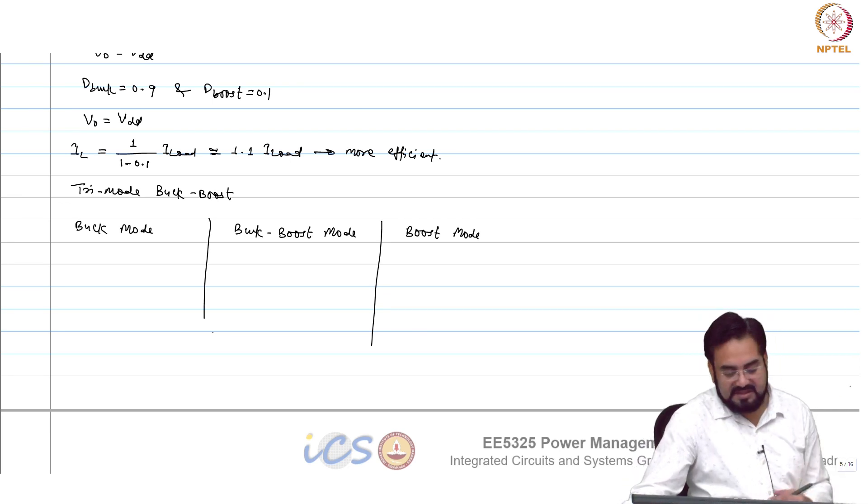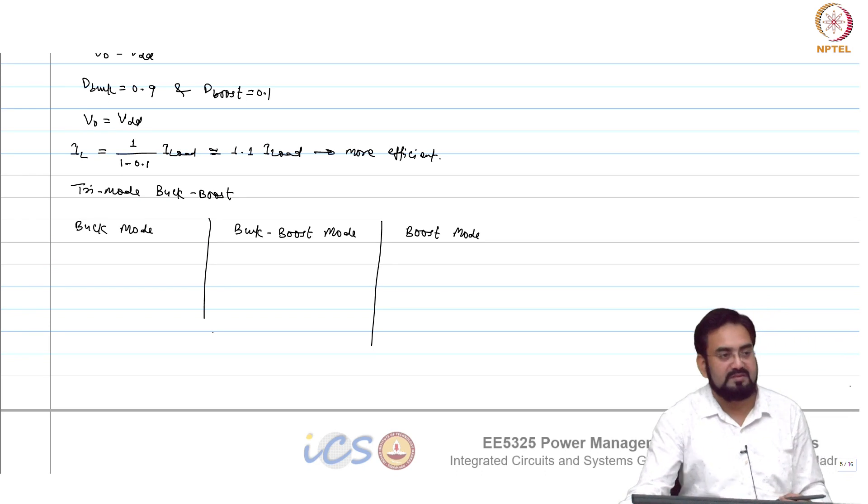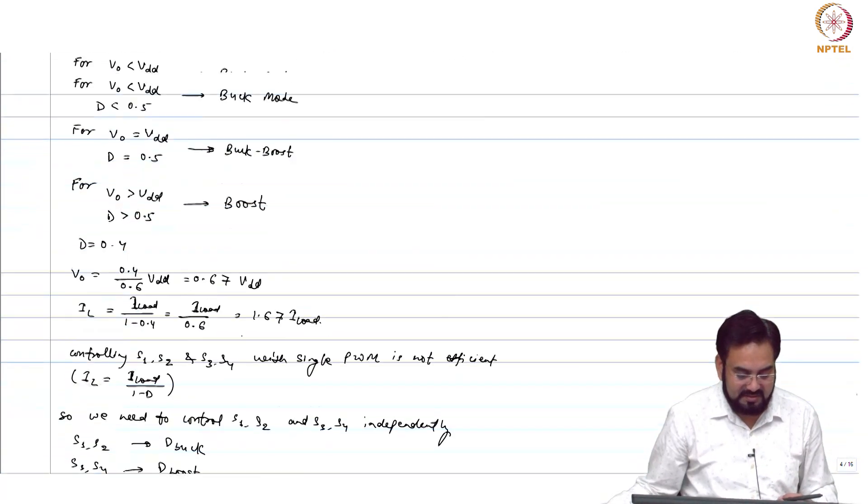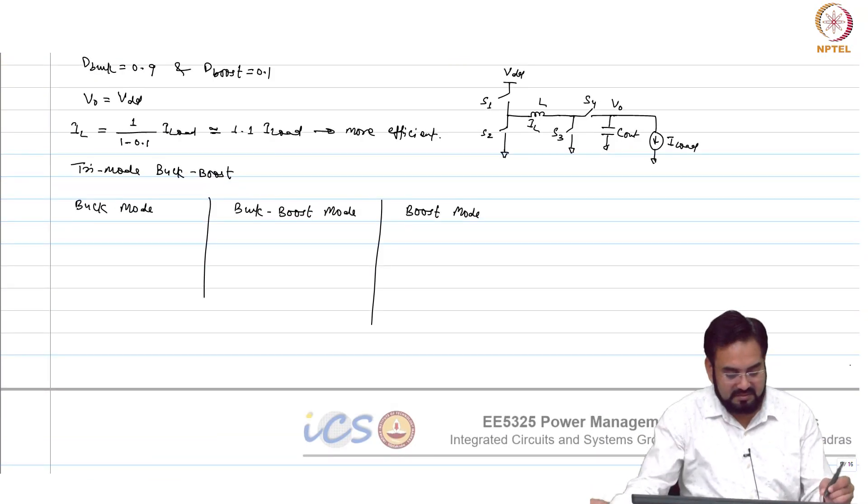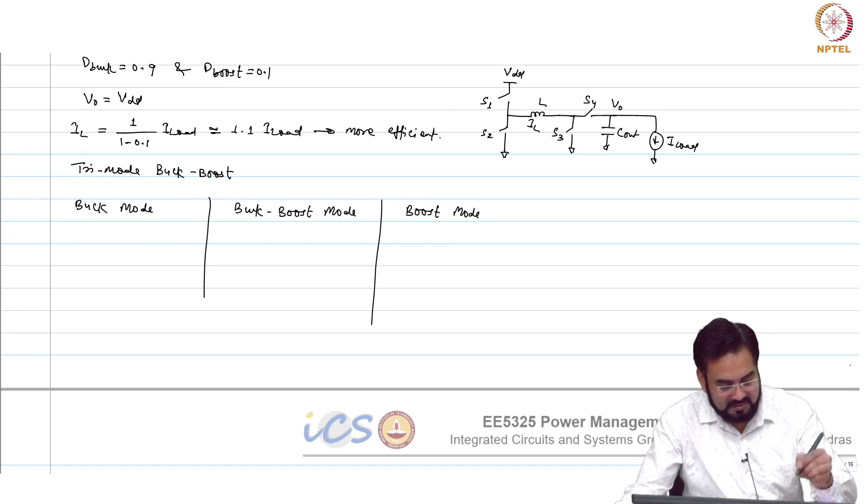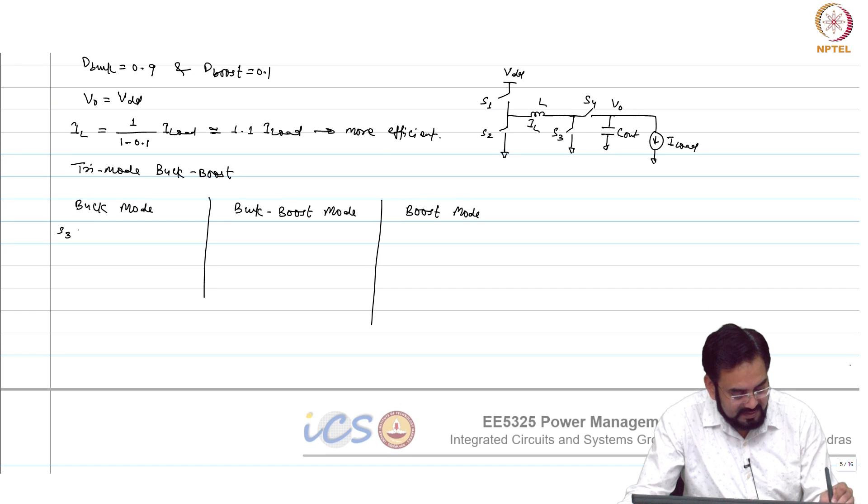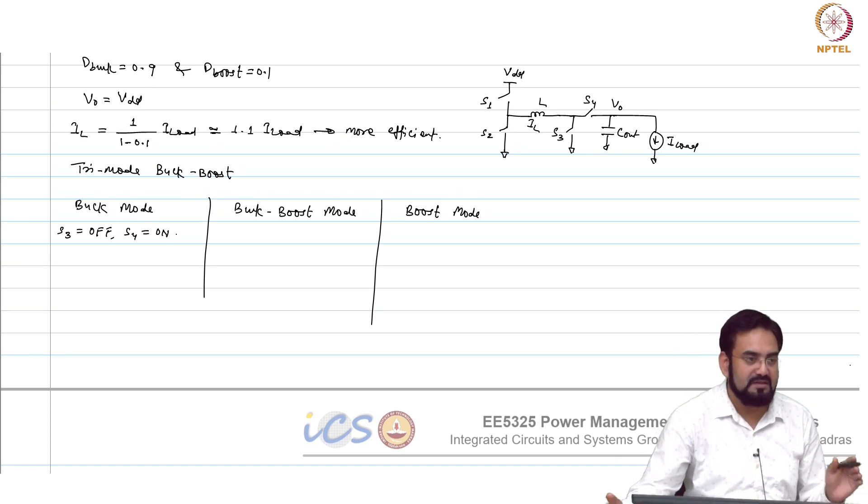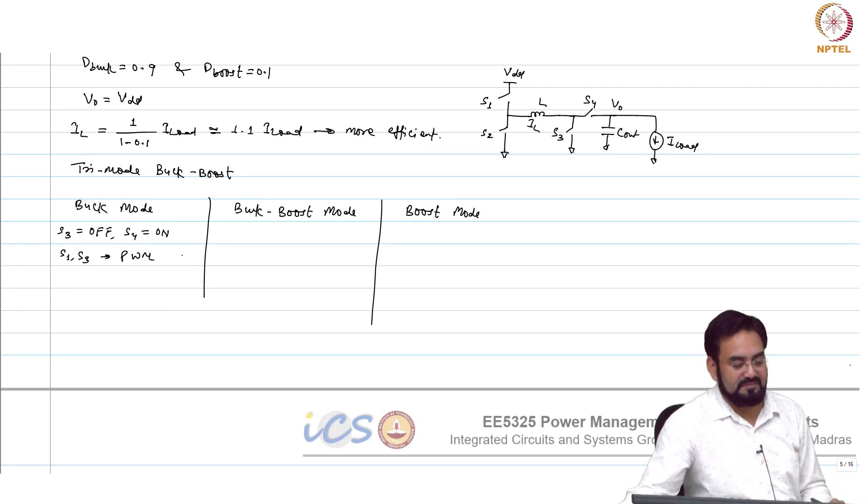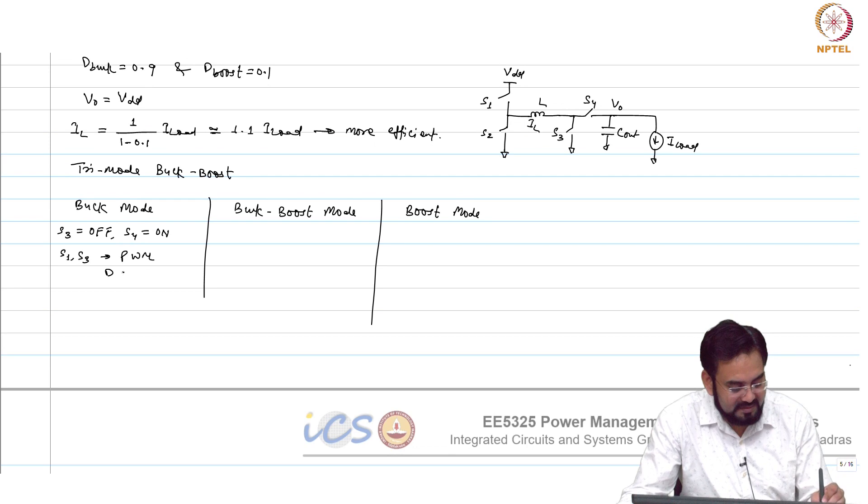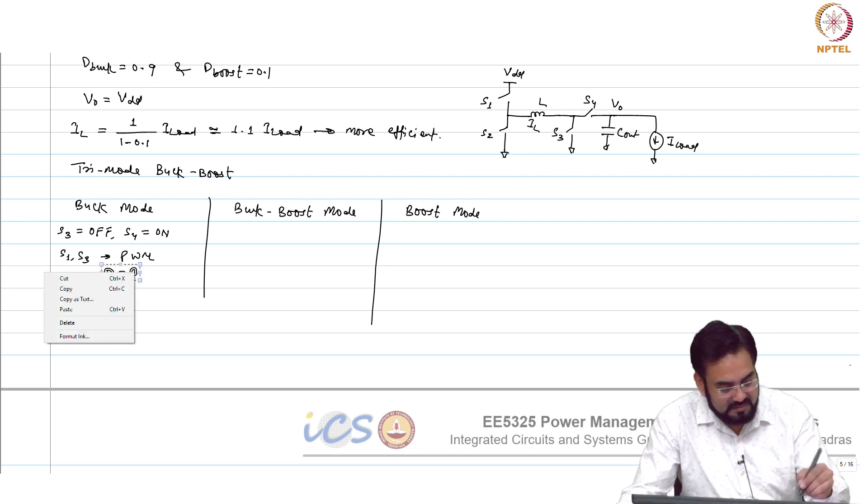Tell me what will be the states of the switches in buck mode. You have the circuit here. S3 is off, S4 is on, and now it will look like a conventional buck converter where S1, S2 will be PWM, where D is debug.